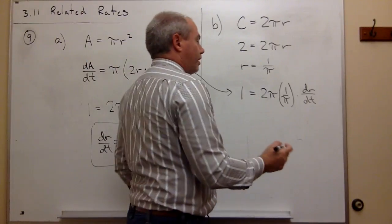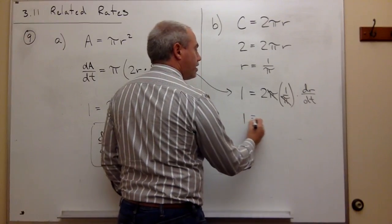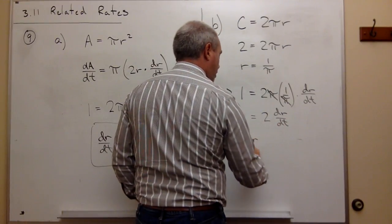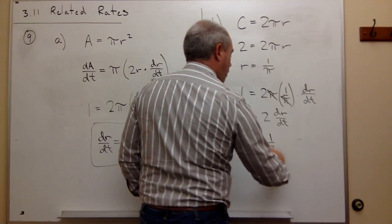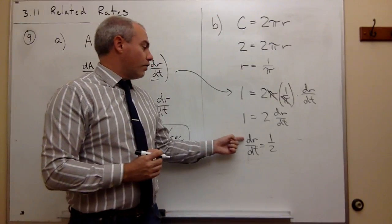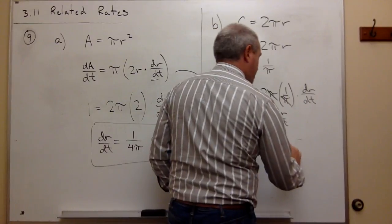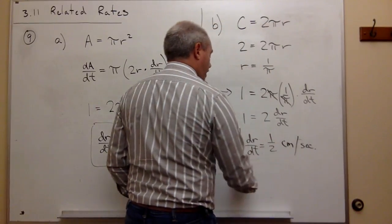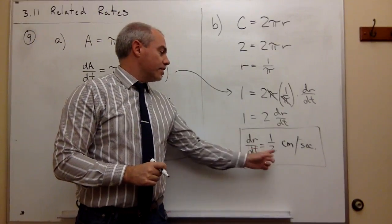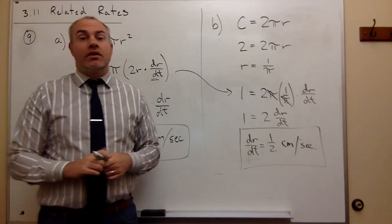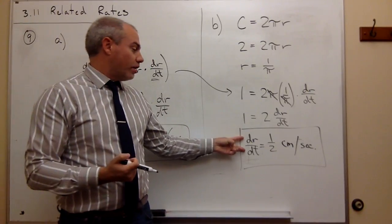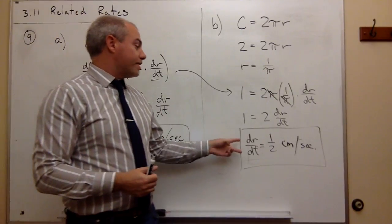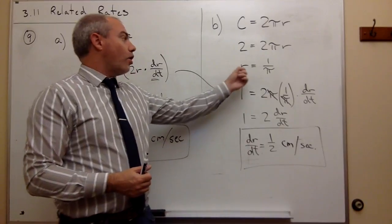Doing a little manipulation, the pi's cancel, and I'm left with 1 equals 2 times dr/dt. Solving for dr/dt gives dr/dt equals one half. Including units — r is in centimeters and time is in seconds — so dr/dt equals one half centimeters per second. That's the rate at which the radius is changing when r equals 1 over pi.